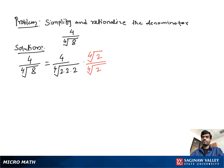with fourth root 2. Then we get 4 times fourth root 2 over fourth root of 2 times 2 times 2 times 2.